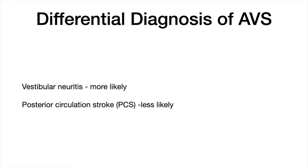In patients with constant dizziness and nystagmus seen at rest — also known as the acute vestibular syndrome — the differential diagnosis is basically: is this vestibular neuritis, which is more likely, or is this a posterior circulation stroke masquerading as vestibular neuritis, which is less likely.